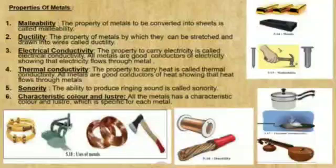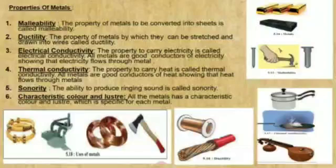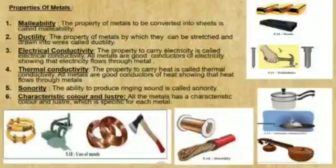The next one is ductility. Just take a hot iron hammer and make it into a thin sheet. Even better, visit a blacksmith shop. Iron bars, when hammered continuously, become longer. The iron can be drawn into a wire. Metals can be stretched and drawn into wire. This property of metal is called ductility. Metals like silver, gold, and copper can be drawn into fine wire.